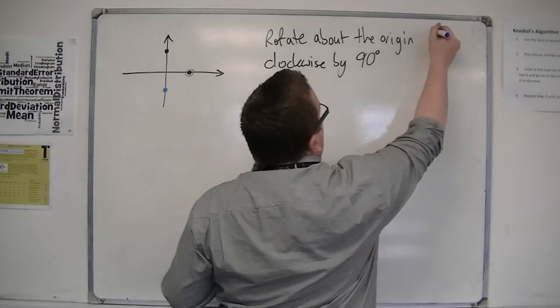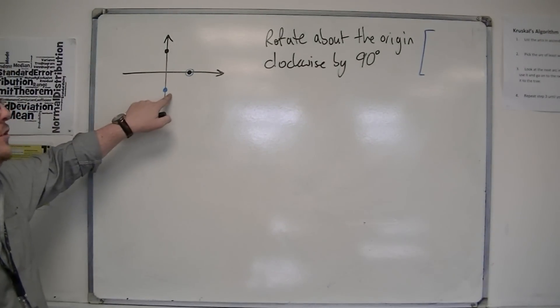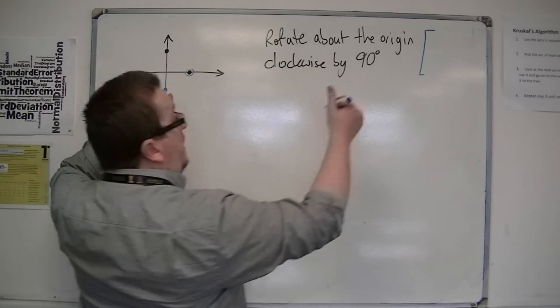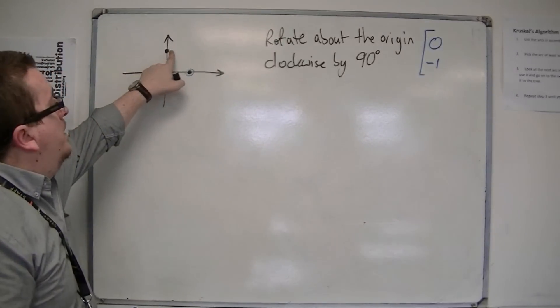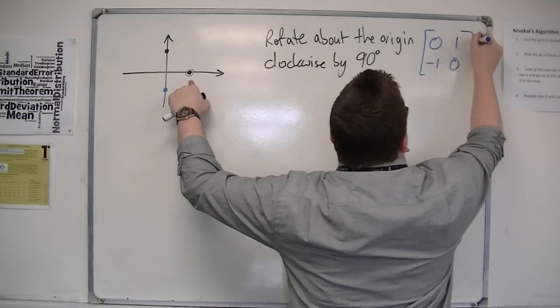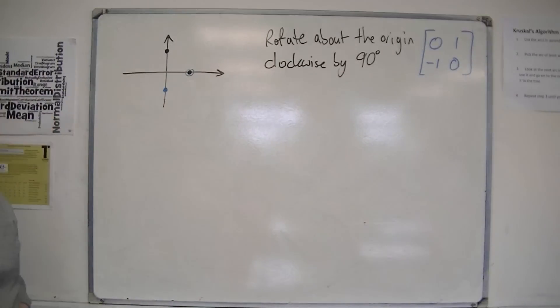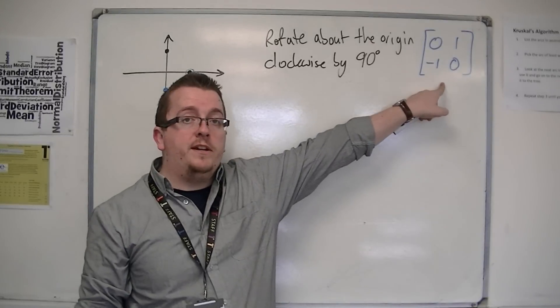So in actual fact what we find is that one zero has rotated round so it's now zero minus one, and zero one has rotated round to become one zero. So this is the matrix that is a rotation about the origin clockwise by 90 degrees.